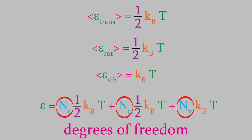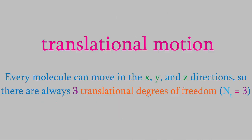So how many translational degrees of freedom are there? It turns out that every molecule can move in the x, y, or z direction, so there are three translational degrees of freedom.